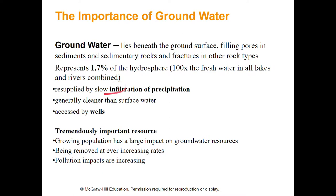Groundwater is resupplied through slow infiltration of precipitation. Remember the water cycle from last chapter - groundwater comes from water evaporated mainly from oceans, which comes over land as rain, and that water infiltrates into the ground. In general, groundwater is cleaner than surface water because it gets purified by running through sediments. Microbes can work out contaminants, and generally the ground acts like a giant sieve to filtrate groundwater.